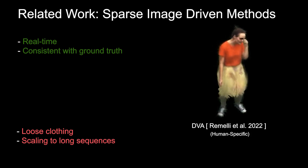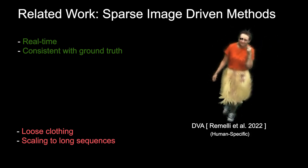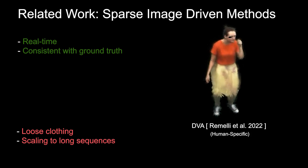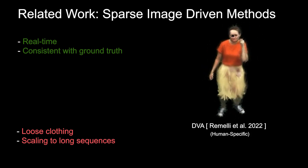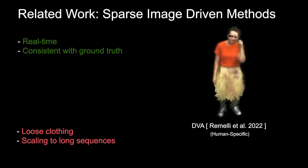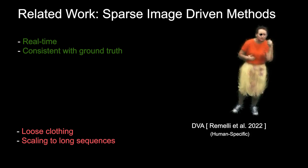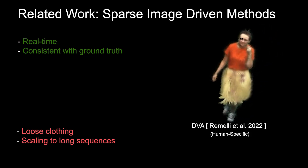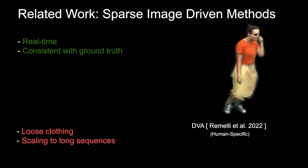Although DVA achieves real-time performance and demonstrates consistency with ground truth data, we observe that it struggles with characters wearing loose types of apparel. Moreover, their result quality degrades when the model is trained and tested on long sequences containing more diverse and complex motions.